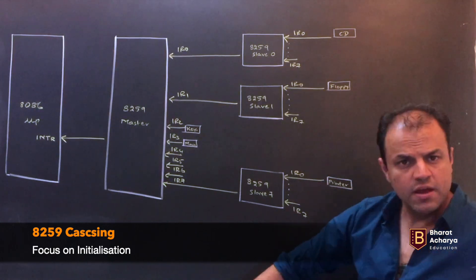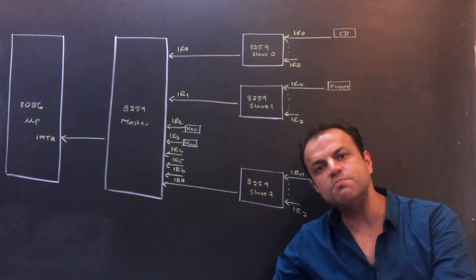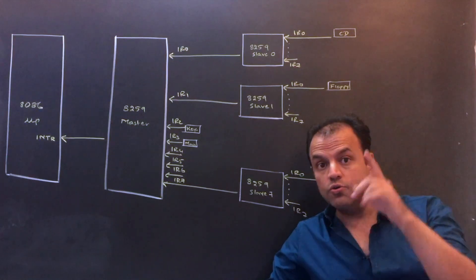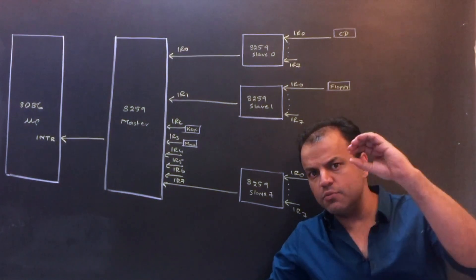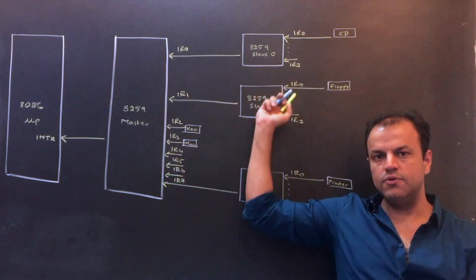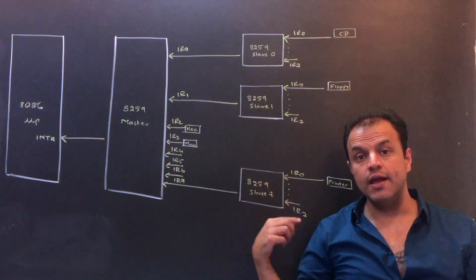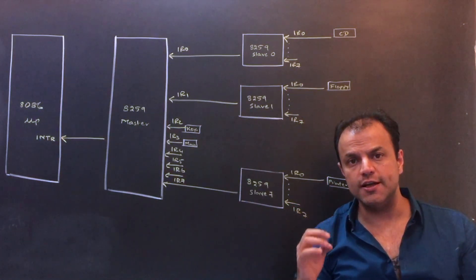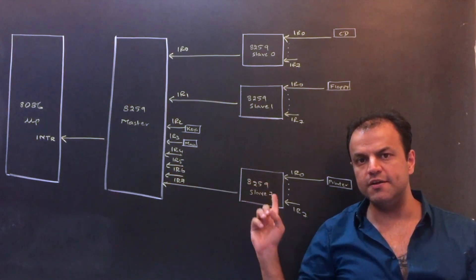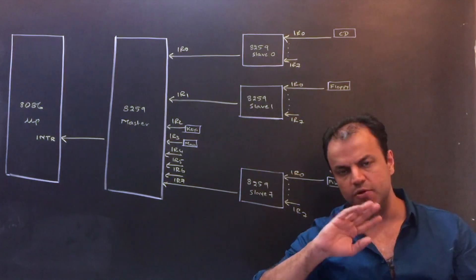I told you about initialization in the beginning of the video. Initialization is absolutely compulsory. The most important thing you tell during initialization is vector numbers, so that the 8259 knows what vector number has to be given. You don't give all 8 vector numbers - you only give the vector number of IR-0. The remaining are taken in a sequence. Now who are you going to initialize - the master or the slaves? All. Every 8259 has to be individually initialized. If you forget to initialize even one 8259, that chip will not work and the whole system will crash.